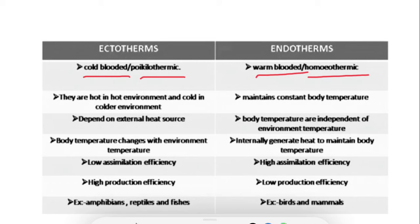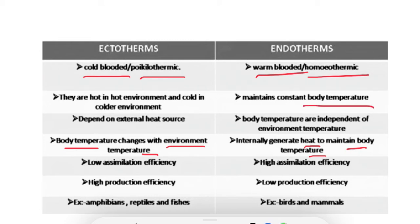Ectotherms are called cold-blooded animals because their body temperature changes with environmental temperature. When the environmental temperature changes, their body temperature changes — in short, they are not able to adjust their body temperature. Whereas warm-blooded animals, or endotherms, they generate heat internally to maintain body temperature, so the body temperature always remains constant.